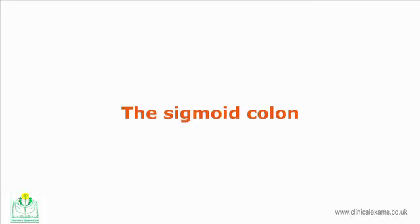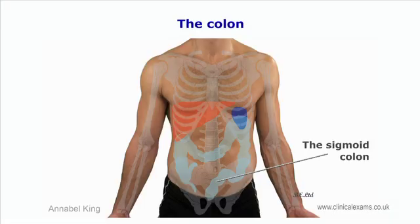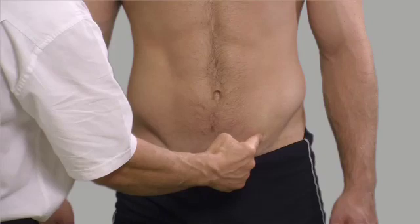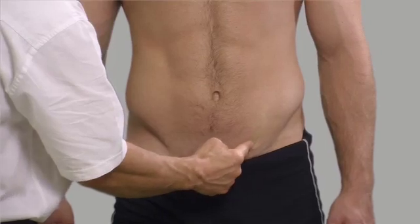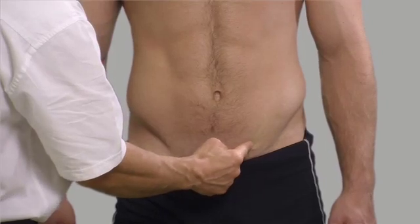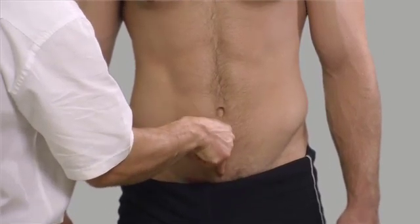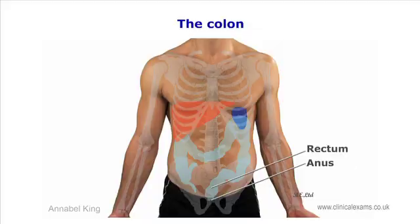From the splenic flexure, the descending colon descends towards the left iliac region, where it turns posteriorly. The sigmoid colon then follows in an S-shaped convolution, with its distal part projecting straight downwards anterior to the sacrum to form the rectum and anal orifice.